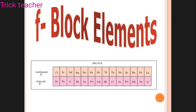The number of F-Block elements: there are 14 Lanthanoids and 14 Actinoids. These are the two rows placed separately at the bottom of the periodic table.